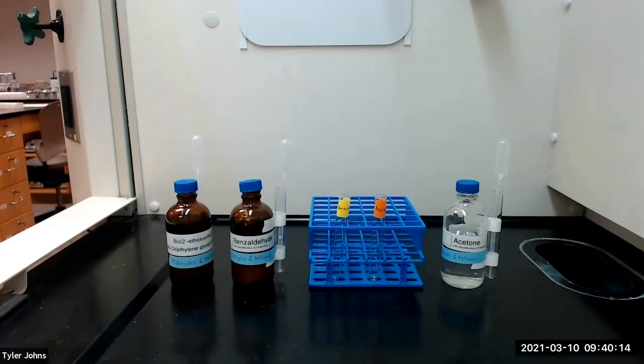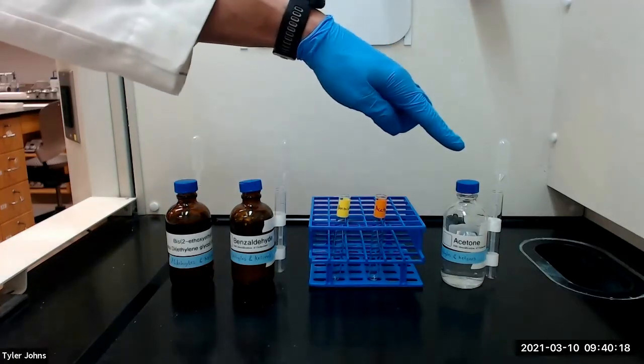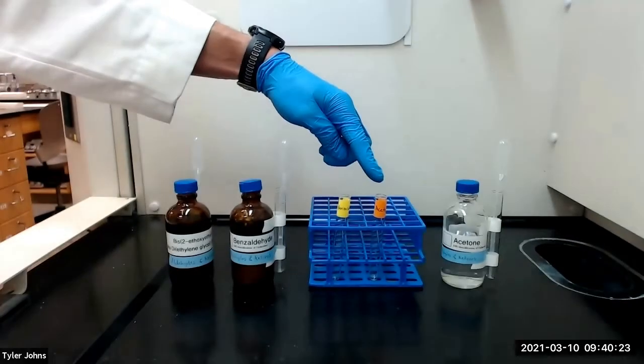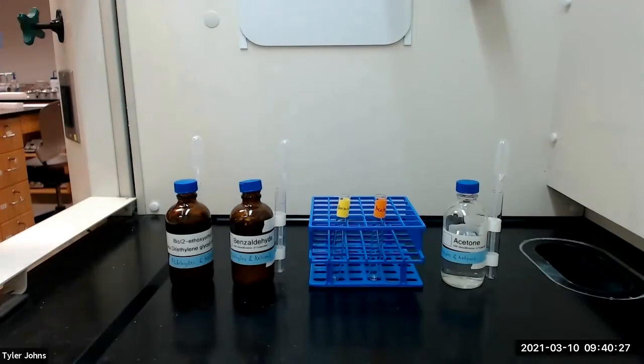We will practice the Tollens test with two known compounds, benzaldehyde and acetone, and we will begin by dissolving a couple drops of each compound in separate test tubes with a minimum amount of diethylene glycol diethyl ether.